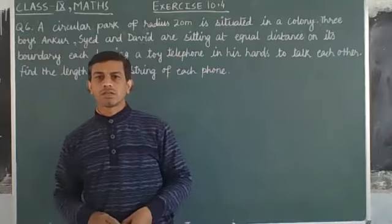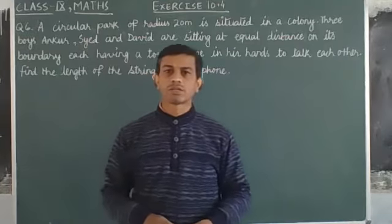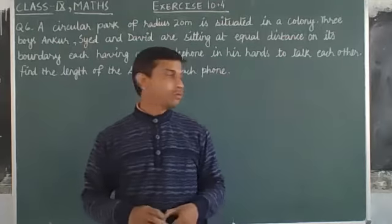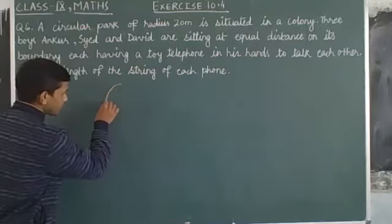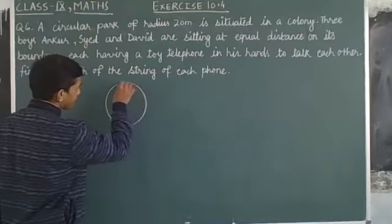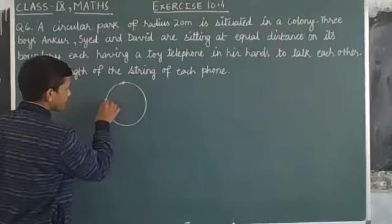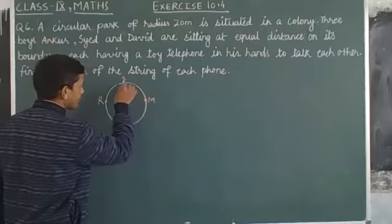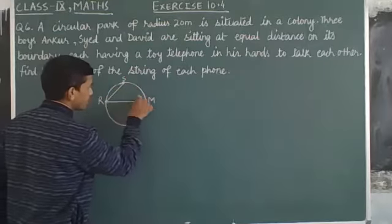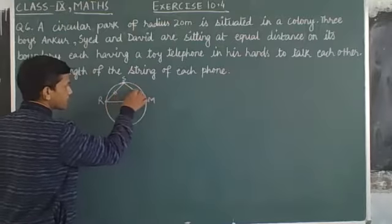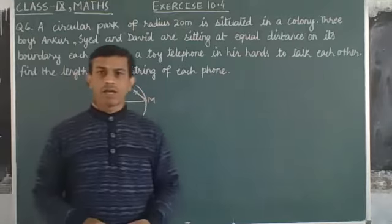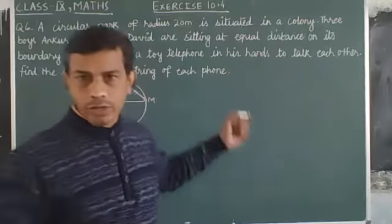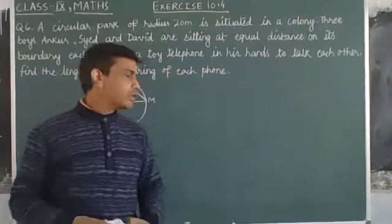But before starting with this, I want to rectify a statement from previous question number 5. In the previous lecture, I told you that the triangle RSM is an equilateral triangle, but actually it is an isosceles triangle because RS and SM are equivalent, each measuring 6 meters. So it was not an equilateral but an isosceles triangle.